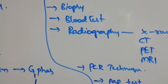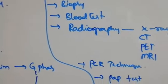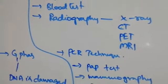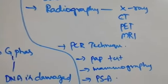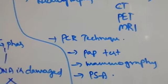Blood test to know leukemia. If the WBC count increases, that indicates leukemia. Radiography: X-ray, CT, PET, MRI. All these are helpful for knowing the tumors present in the body.